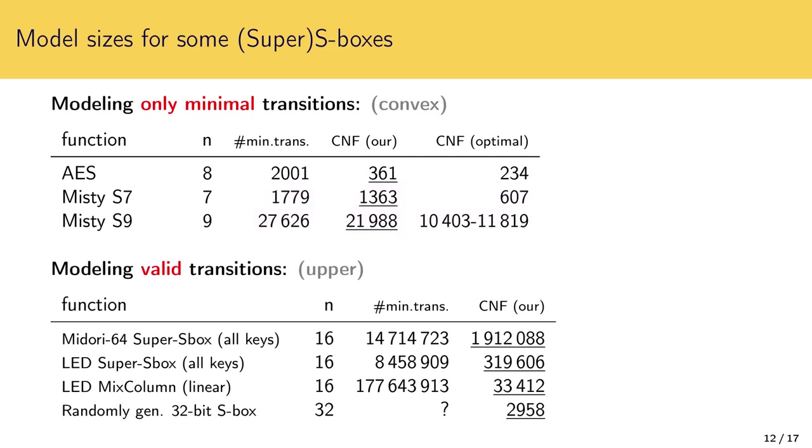For larger s-boxes, I focus only on the number of constraints necessary to remove the invalid trails. Redundant trails can be removed imprecisely by much smaller formulas, such as cardinality constraints. We can model super s-boxes with varying success. For example, strong LED's super s-box can be modeled by about 300,000 constraints, while weaker Midori's super s-box requires two millions. For modern SAT solvers, it may be still in the feasible range, but it really depends on the exact setup. An interesting case is the heavy linear layer of LED, which is based on an MDS matrix. It was the source of complexity in the work by Derbez and Foucq. It can be modeled by just 30,000 constraints using our method. Finally, merely as a proof of concept, we managed to model a randomly generated 32-bit s-box. As I mentioned before, heavy s-boxes tend to have very compact representations, which is nicely illustrated by this case, where we need only 3000 CNF clauses to model all valid transitions.